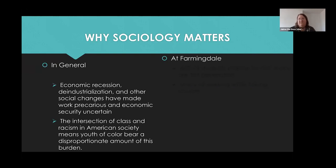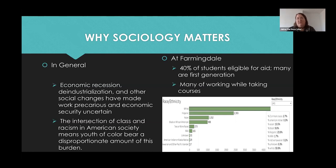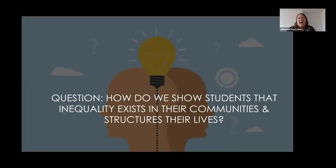Sociology and the sociological imagination really matter for a variety of reasons. We live in an economic context with a lot of recession, deindustrialization taking away working-class jobs, more precarious employment, and increasing student loan debt. The intersection of class and racism means students of color bear the brunt of many of these changes. Having tools to make sense of this — to realize it's not a product of their own choices but broader social problems — is a really important lesson, especially for students at Farmingdale State College, where many come from relatively poorer families eligible for financial aid, many are first generation, and many are taking classes while working.